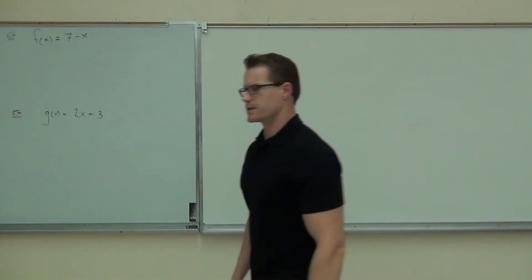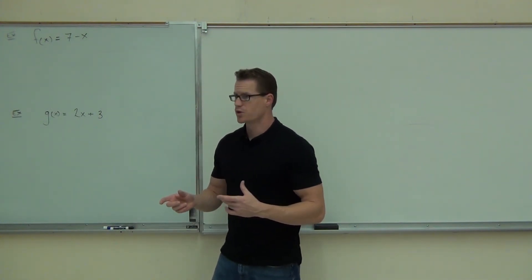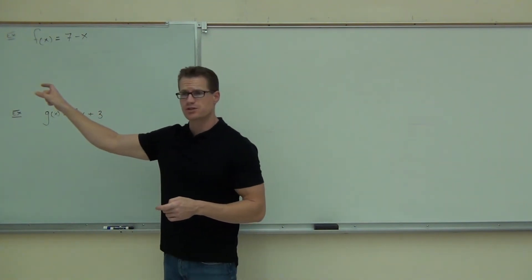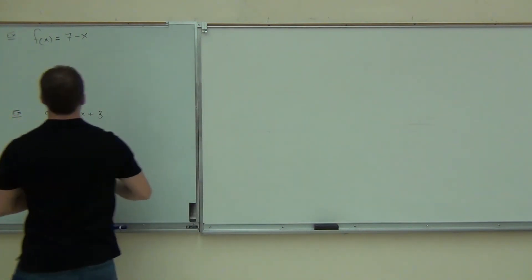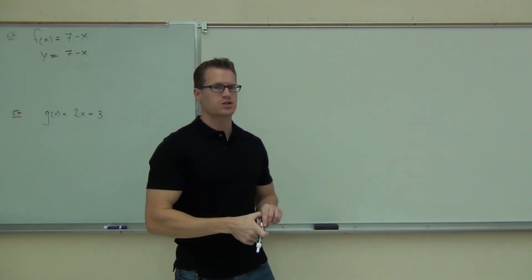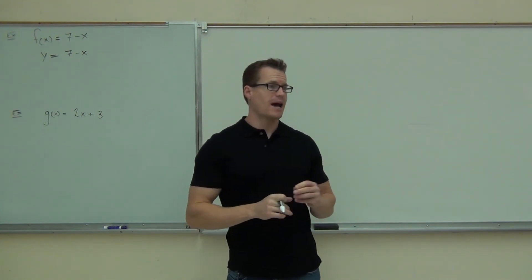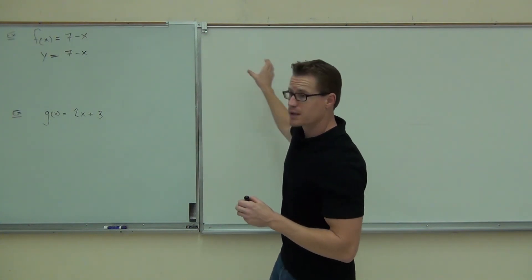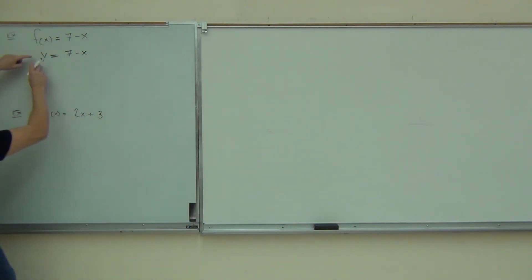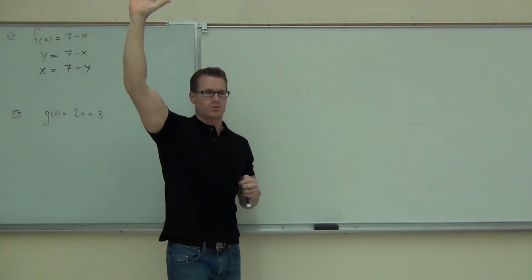Let's see the first example. Finding an inverse means we're switching X with Y, so we need a Y up there. Replace F of X with Y, so we have Y equals 7 minus X. That's step one. Next — the most important thing — switch your variables. That's the act of finding an inverse. So instead of Y equals 7 minus X, you're going to have X equals 7 minus Y.